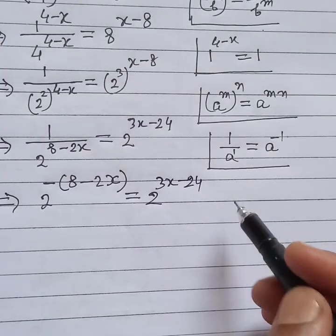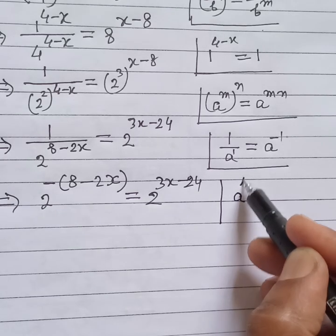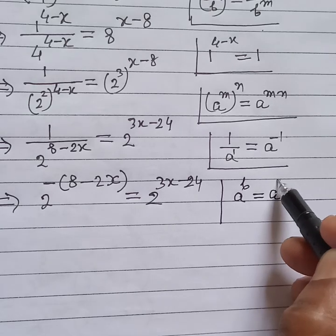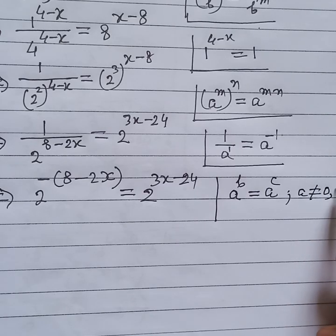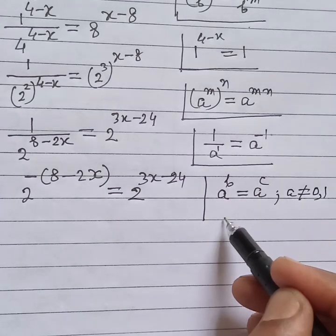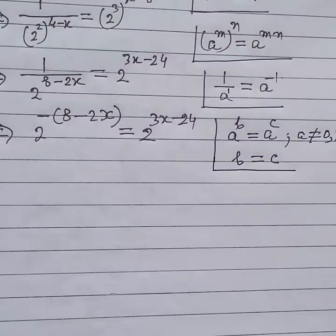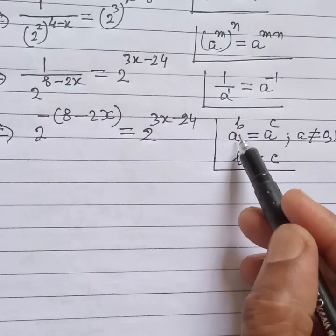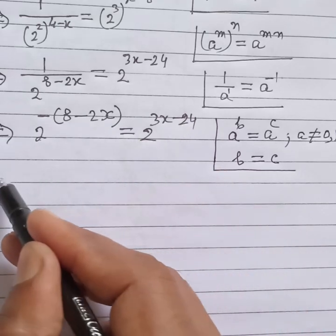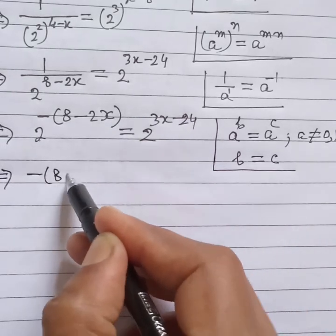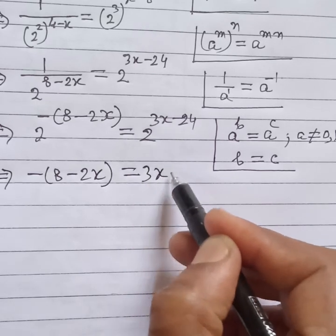Now we apply another rule of indices: if a to the power b is equal to a to the power c, and a is not equal to 0 or 1, then b is equal to c. Since both sides have the same base 2, we can equate the exponents: minus (8 minus 2x) is equal to (3x minus 24).